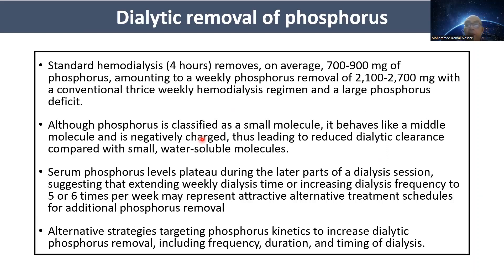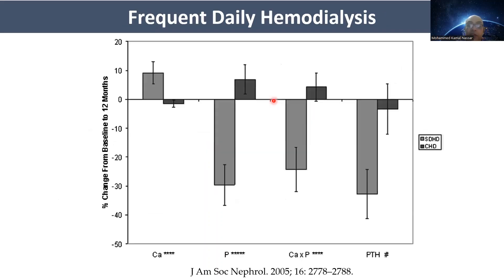The second modality for hyperphosphatemia management is dialytic removal of phosphorus. Standard hemodialysis — four-hour sessions — removes on average 700 to 900 mg of phosphorus, amounting to a weekly removal of 2,700 mg with conventional thrice-weekly hemodialysis. Although phosphorus is classified as a small molecule, it behaves like a middle molecule and is negatively charged, leading to reduced dialytic clearance. Serum phosphorus levels plateau during the latter part of dialysis, suggesting that extending dialysis time or increasing frequency to five to six times per week may improve phosphorus control. Observational studies and larger trials confirmed that daily frequent hemodialysis achieves more reduction in serum phosphate compared to conventional dialysis.